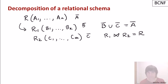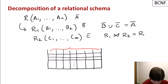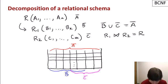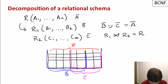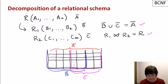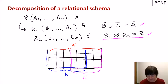Let me draw this pictorially. Here's relation R with all the A attributes. We decompose R into R1 and R2 — the first set of attributes are the B attributes, and the second set with some overlap are the C attributes. R1 consists of the B portion of R, and R2 is the C portion. Clearly B and C together equal the original attributes. The question is whether the join of R1 and R2 gives us R back. Remember, all of this is logical — we don't have R itself or the data.